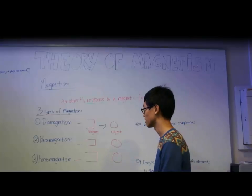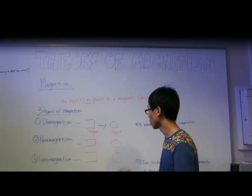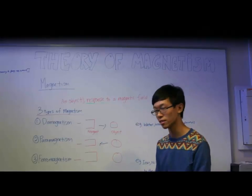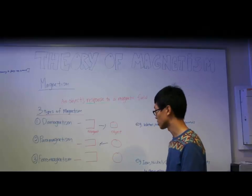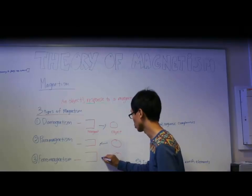The next one is paramagnetism, whereby if you place an object near a magnet, the object gets attracted towards the magnet. The last one is ferromagnetism, whereby when an object is placed near a magnet, it also gets attracted towards the magnet.